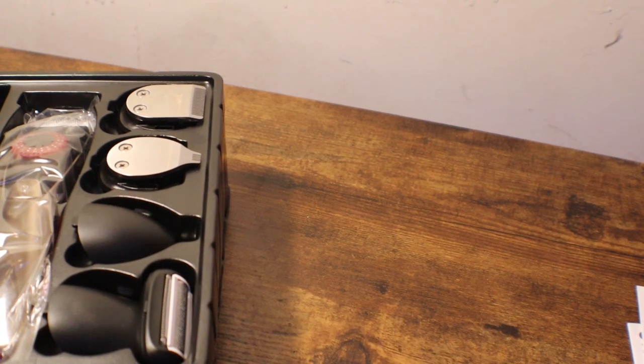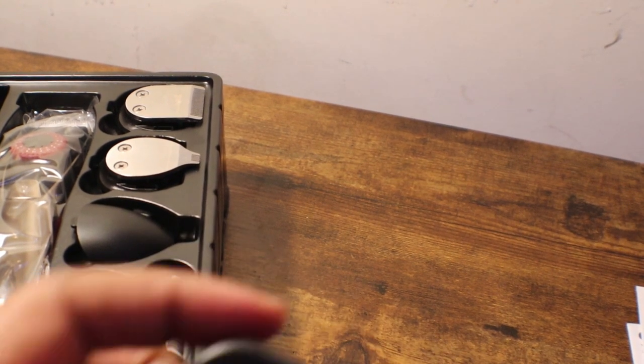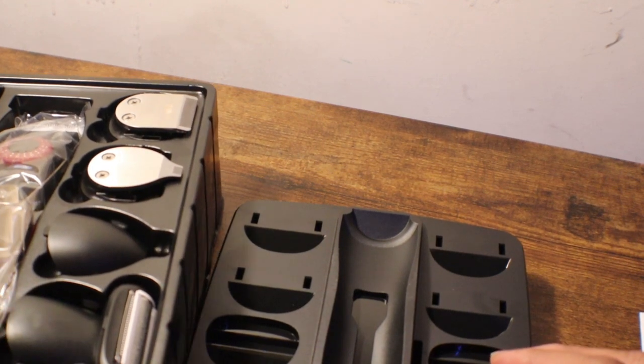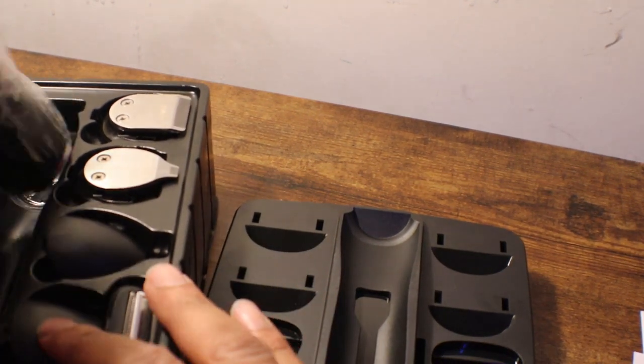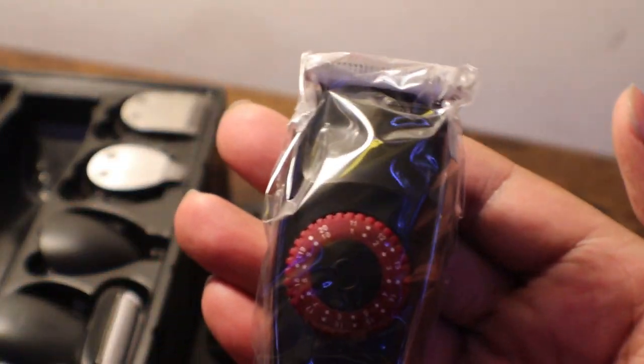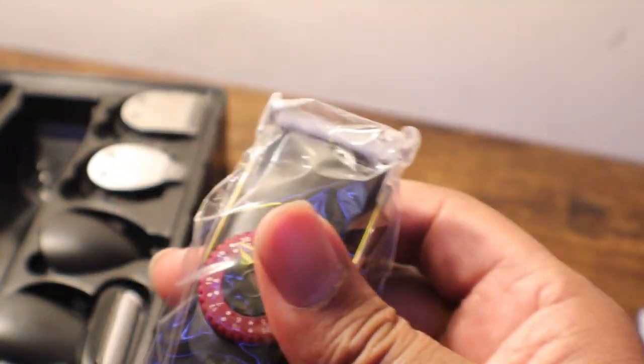It's the box, throw that to the side, we don't need that. All right, so here is the actual storage container or the storage thing that comes with. Now you see the clippers come in plastic.